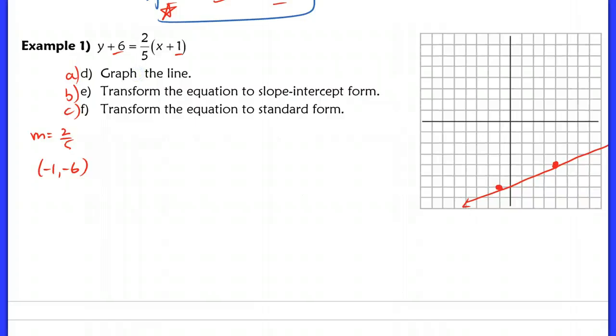Second part here says to transform the equation to slope-intercept form. So here we're just working with fractions, which is why it makes it a little bit more difficult. So what I'm going to do is distribute here. I know in the last example, I actually subtracted the six first. It doesn't really make a difference if you distribute and then subtract or subtract and then distribute. So either way is fine. So now I'm going to subtract that six, and I end up with two-fifths x plus two-fifths minus six.